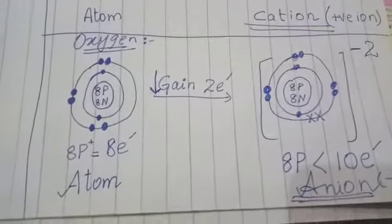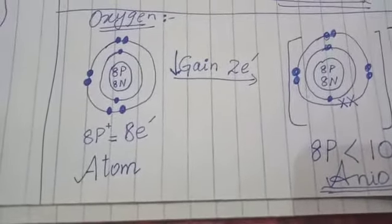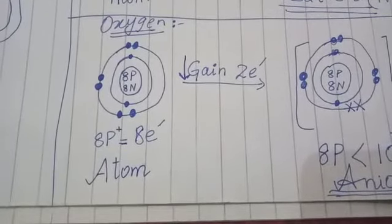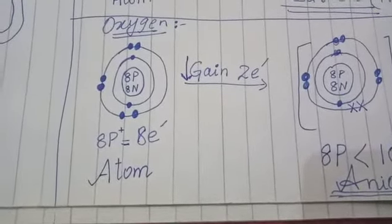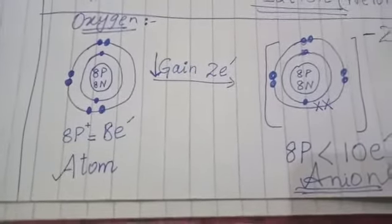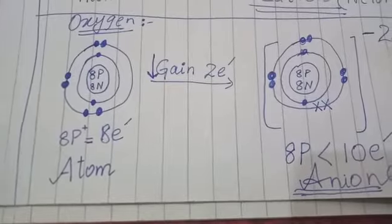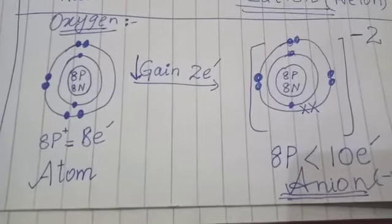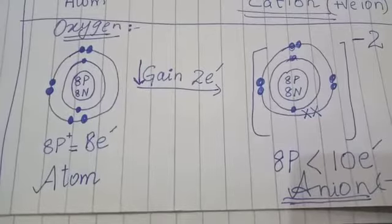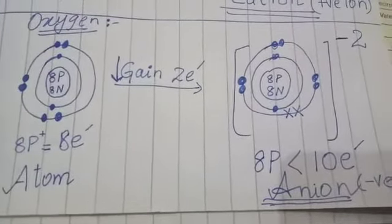Similarly, the oxygen atom has eight protons and eight electrons. The number of protons and electrons is equal, so the oxygen atom has no charge. But when it gains two electrons, the number of electrons increases relative to protons. As a result, the oxygen atom will have a negative charge and it will become an anion.